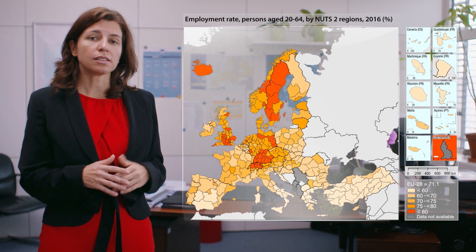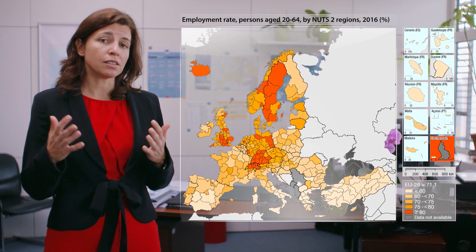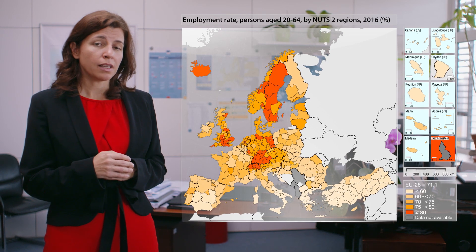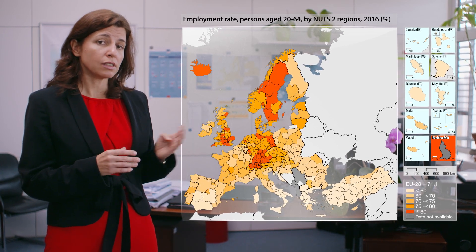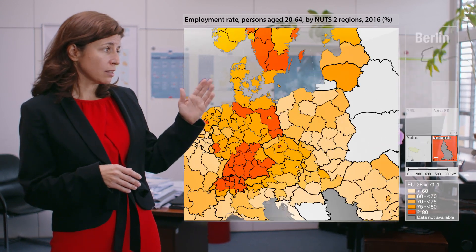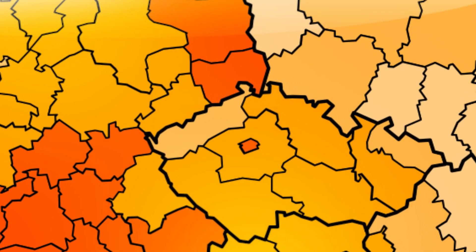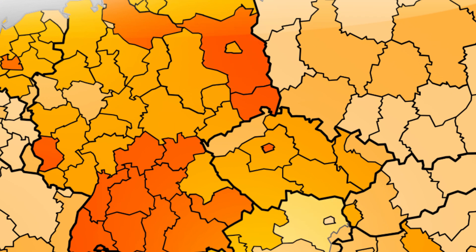This map shows the employment rate for persons aged 20 to 64 at the NUTS level 2 regions. The highest employment rates, equal to or above 75% — which is the Europe 2020 target for this indicator — are marked in the two darkest shades of orange. There were more than 100 regions with such a high employment rate. It is also interesting to note that some capital regions stand out from their surroundings. Look at Berlin, Prague or Vienna. In Prague the employment rate was higher in the city, while in the case of Berlin and Vienna the employment rate is higher in the surrounding region.